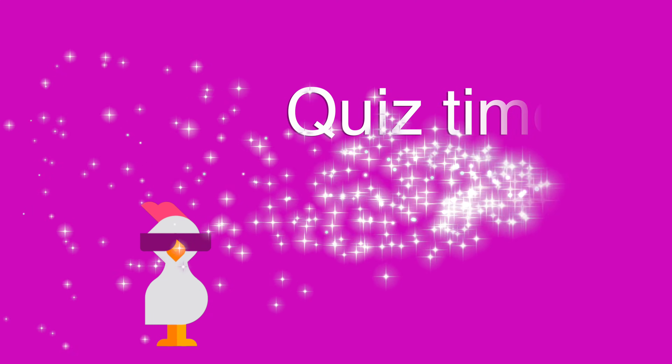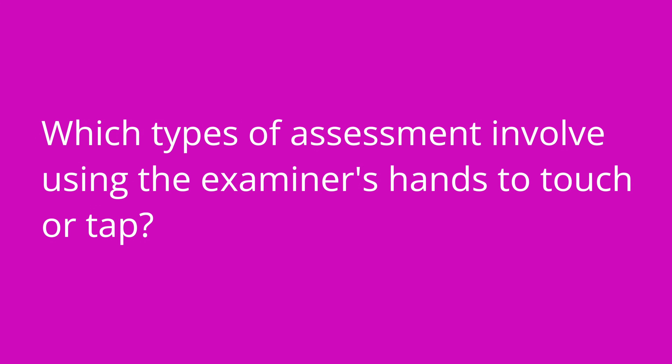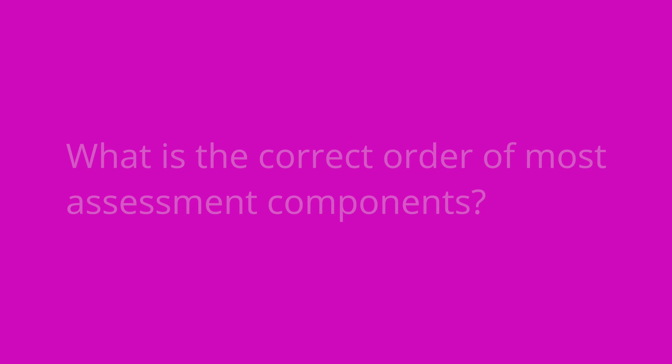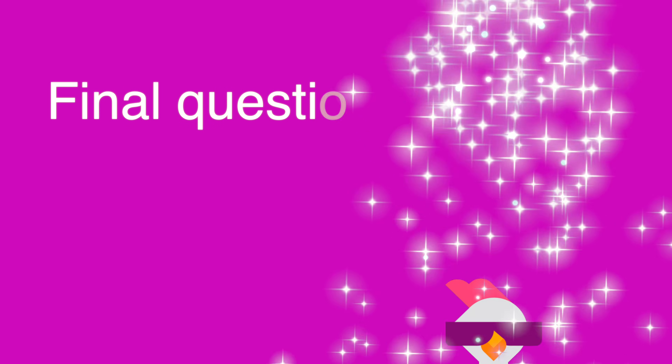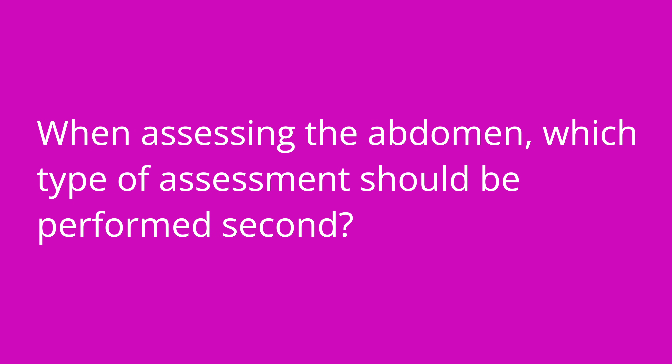That is it for this video — make sure to stay to the end to test your knowledge with quiz questions. Here are the quiz questions: Which types of assessment involve using the examiner's hands to touch or tap? The answer is palpation and percussion. What is the correct order of most assessment components? The answer is inspection, palpation, percussion, and auscultation. When assessing the abdomen, which type of assessment should be performed second? Auscultation should be performed second when assessing the abdomen.